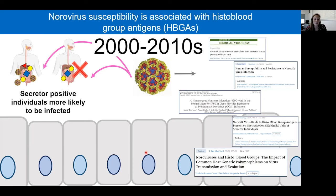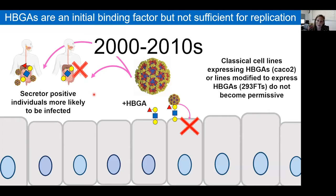We also know from a multitude of studies that norovirus susceptibility is associated with histo-blood group antigens, or your secretor status. Secretor-positive individuals are more likely to be infected by norovirus than secretor-negative individuals. We also know that secretor HBGAs can be an initial binding factor for infection, but this is not enough to allow infection in classical cell lines—even lines modified to express HBGAs do not become permissive.